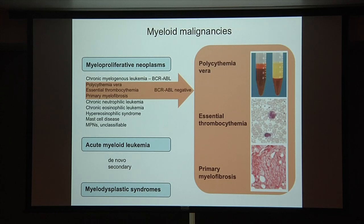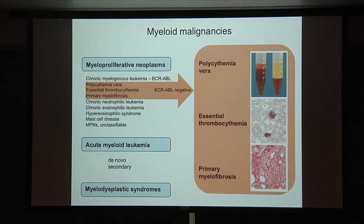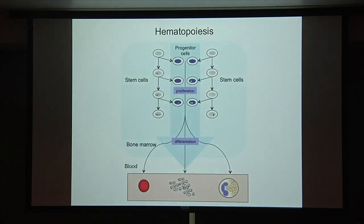Looking at your disease, it is classified today by the WHO as myeloproliferative neoplasm, but there are two additional diseases that are somewhat genetically related but have different severity. Acute myeloid leukemia, either happening without any previous history of blood disease or secondary to myelodysplastic syndrome or MPN — this is the disease group that the lecture is focused on.